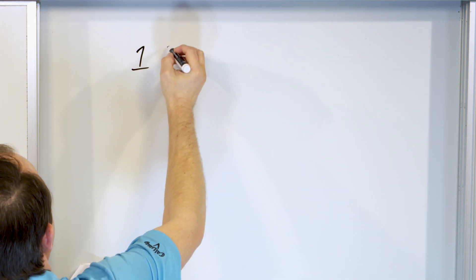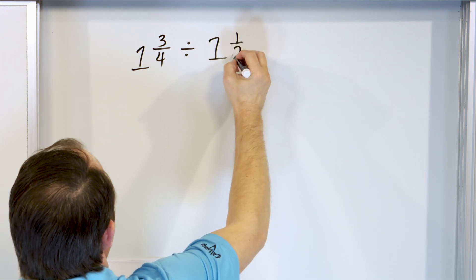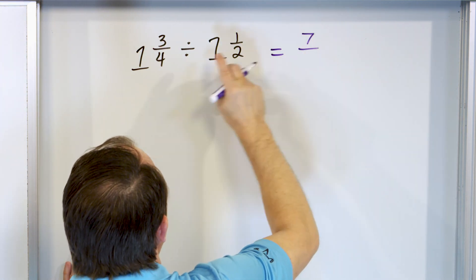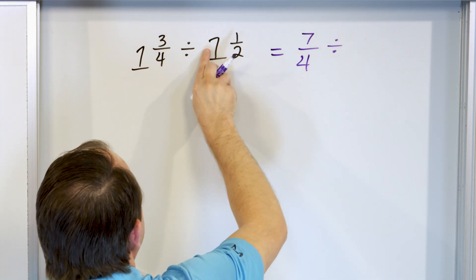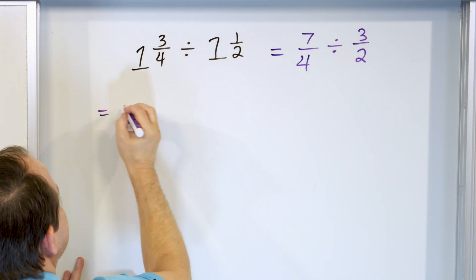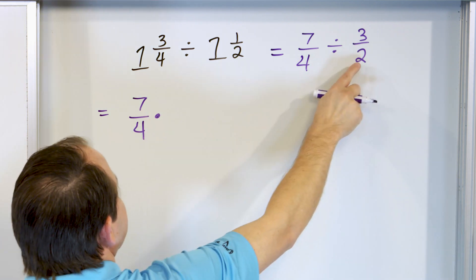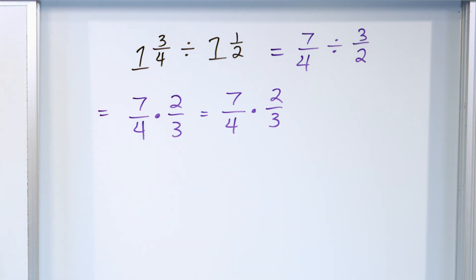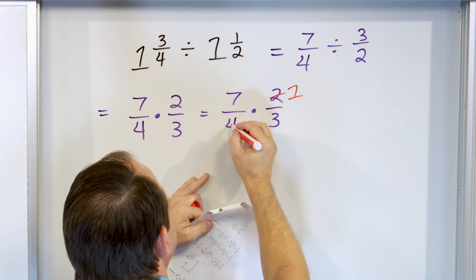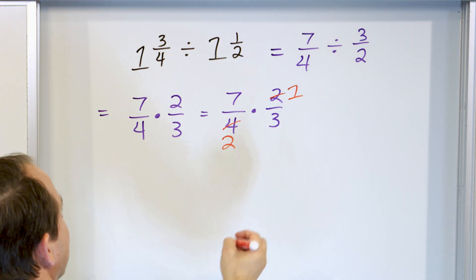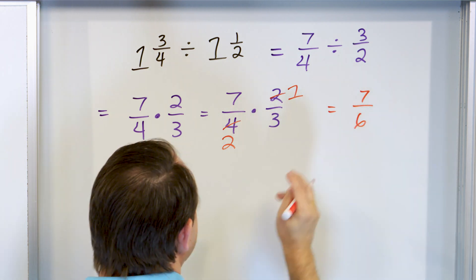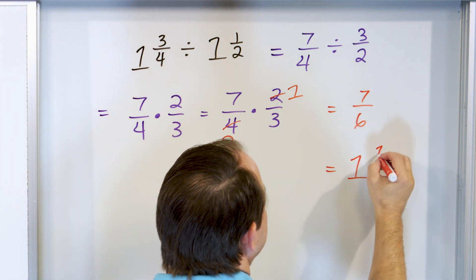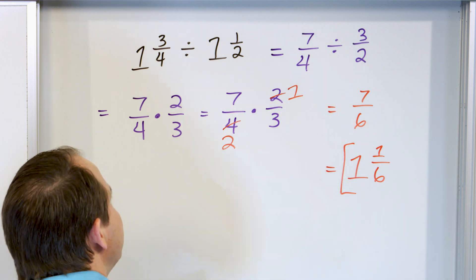Last problem: one and three-fourths divided by one and one-half. Step one: change to improper fractions. One times four is four, plus three is seven-fourths. Two times one is two, plus one more is three-halves. Next, change to multiplication: seven-fourths stays the same, flip three-halves over to two-thirds. Rewriting: seven-fourths times two-thirds. Pre-simplify: two and four — divide by two: two becomes one, four becomes two. Can't do anything else. Seven times one is seven, two times three is six — seven-sixths. Converting to mixed: six goes one time with one remaining, so the answer is one and one-sixth, or seven-sixths.